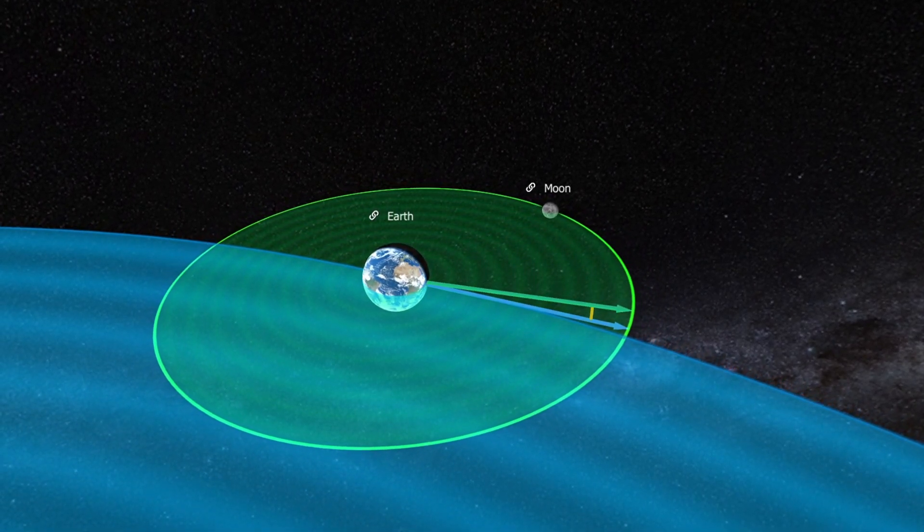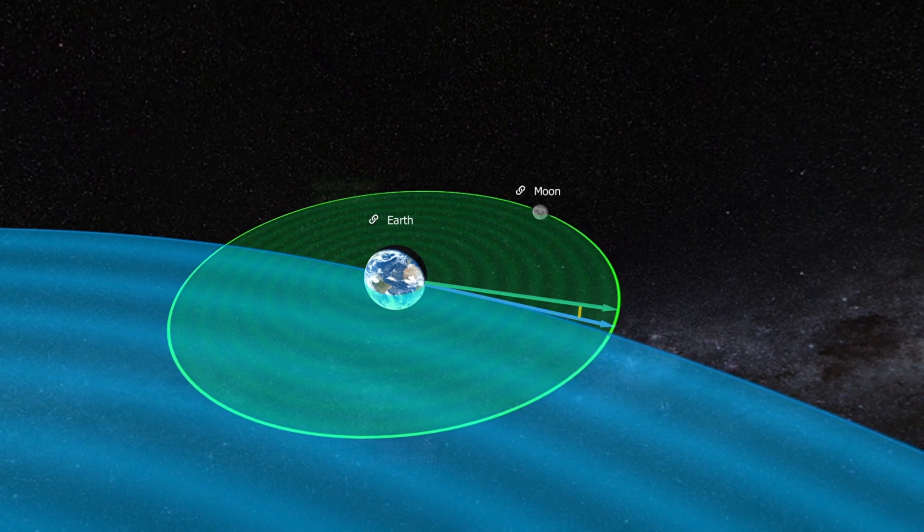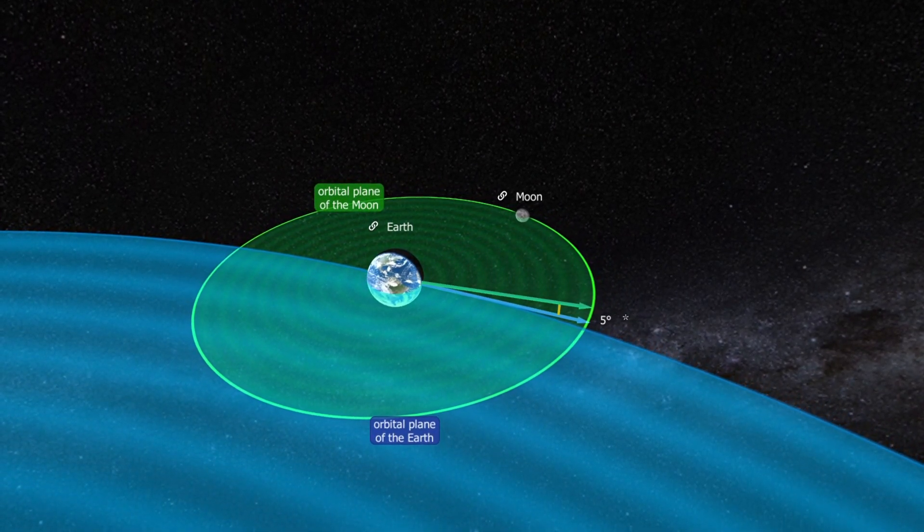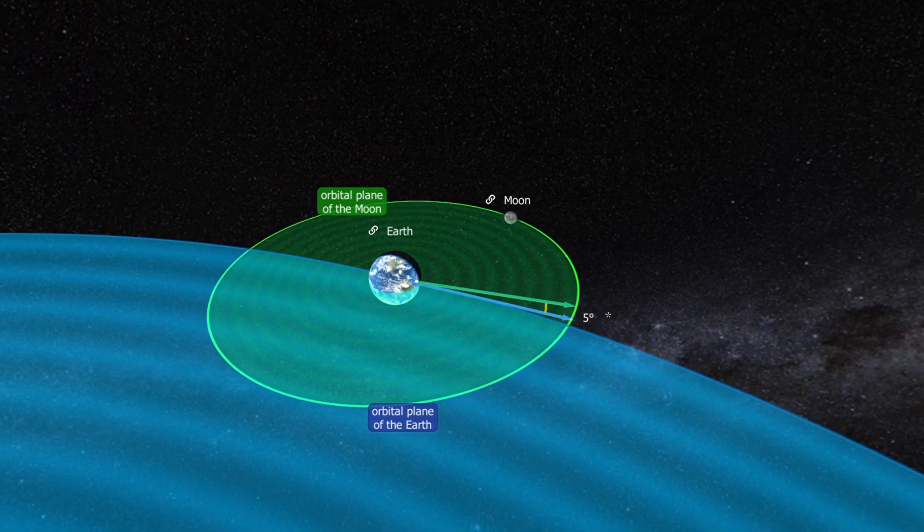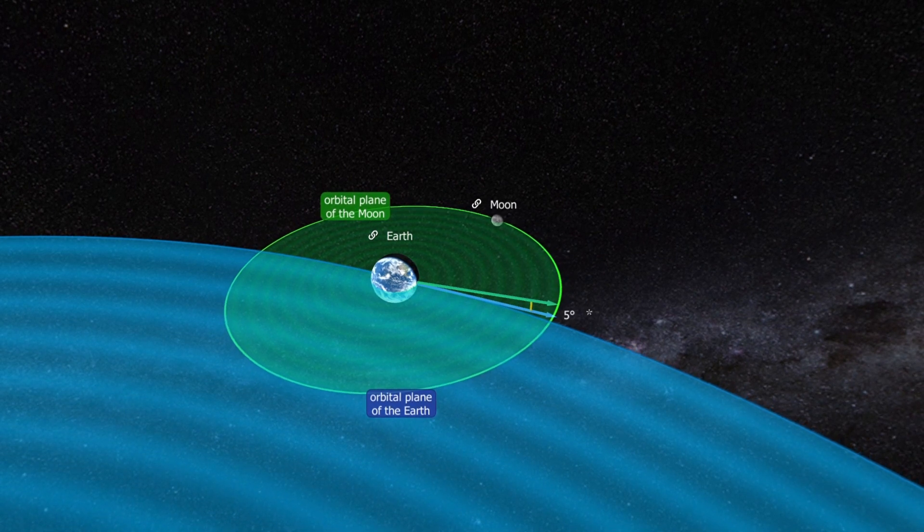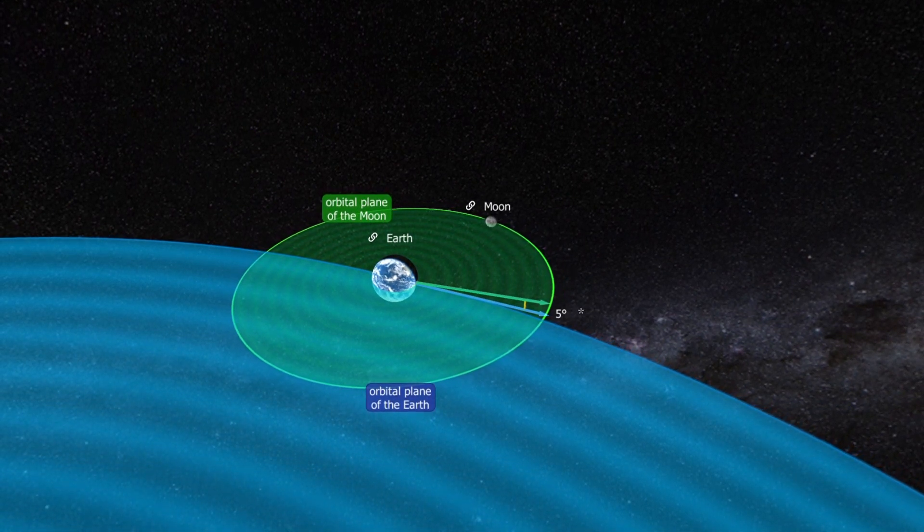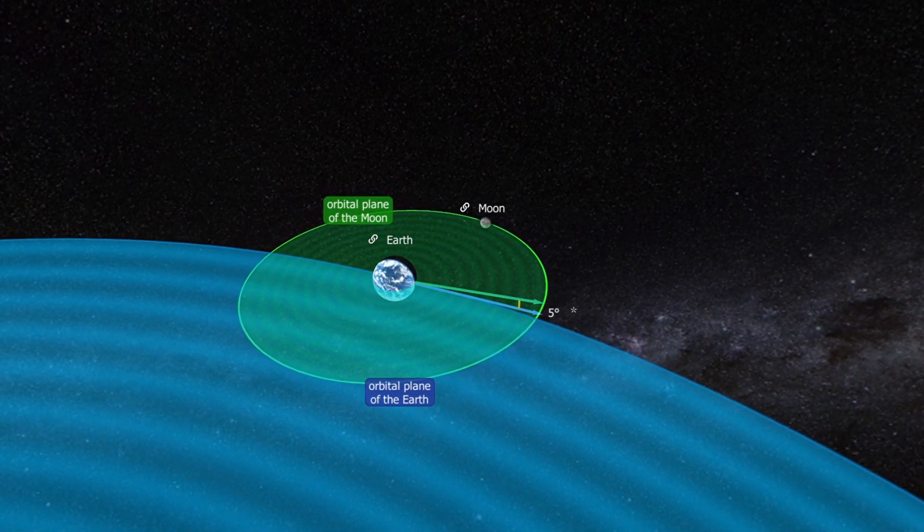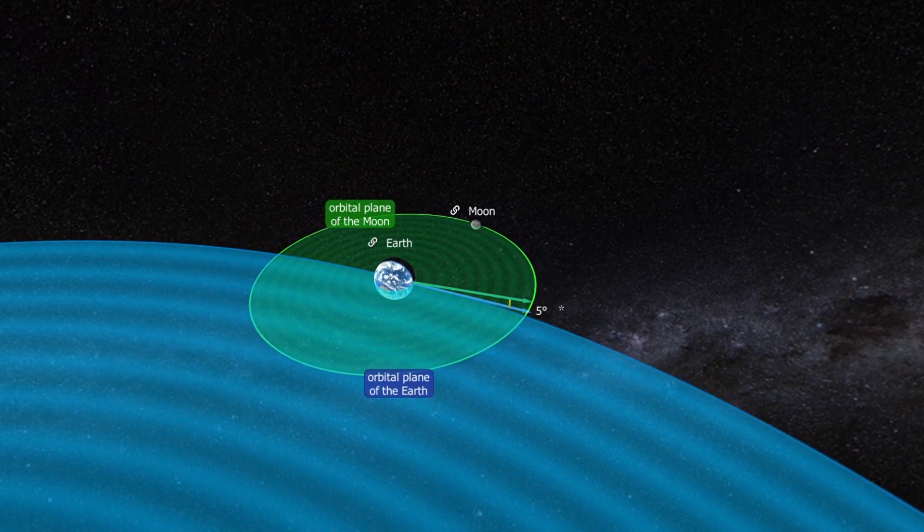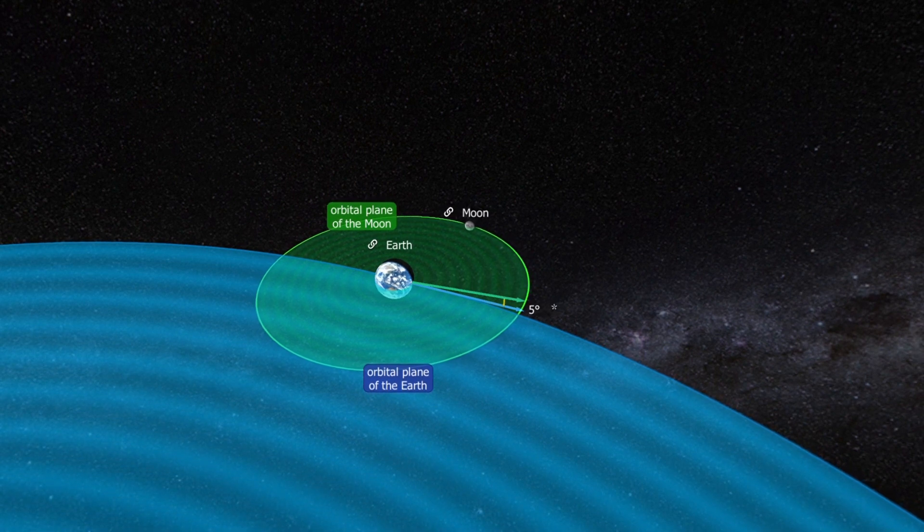The second condition is that the Moon must be located on or near the Earth's orbital plane. Because the Moon's orbital plane is tilted by five degrees with respect to the Earth's orbital plane, i.e., to the ecliptic, full Moon phases usually occur when the Moon is above or below the Earth's shadow. This explains why lunar eclipses do not occur every full Moon, but only two to three times a year.